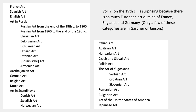This is surprising because there's so much European art outside of France, England, and Germany. If you look in your own art history textbook for the 19th century, you'll probably find very little outside of those three countries. But if you look at this table of contents, you'll see unusual chapters — on Hungarian art, Czech and Slovak art, Polish art, art of Yugoslavia. These were countries in the sway of the Soviet regime, and so they get privileged throughout this book.